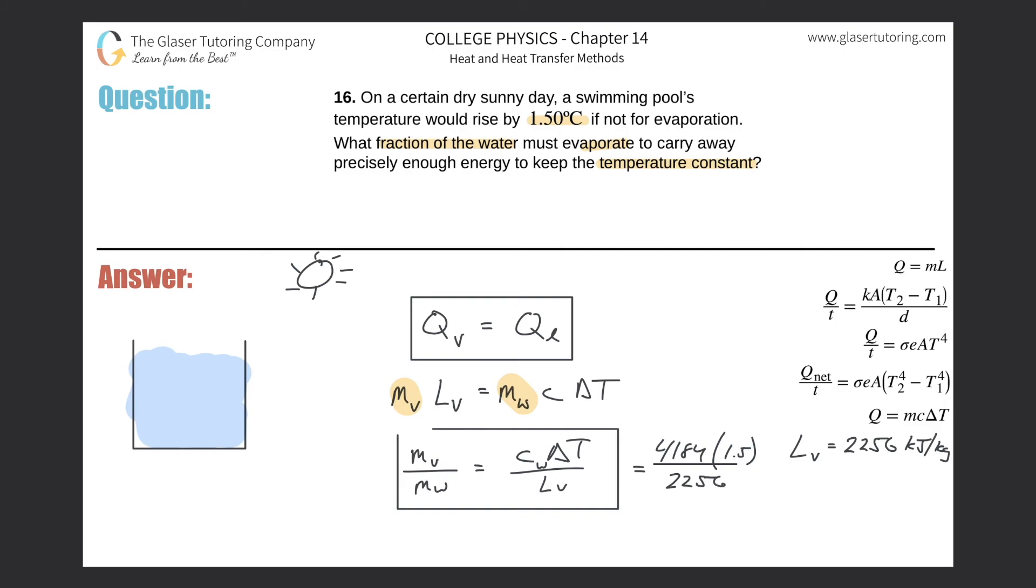And therefore that's divided by the latent heat of vaporization of water. So that's going to be 2256 from the table, but be careful, that's in kilojoules, so you've got to multiply that by 10 to the third to get it into joules. So this is 4184 multiplied by 1.5 divided by 2256 times 10 to the third, and you're going to see a nice tiny little fraction here: 0.00278.